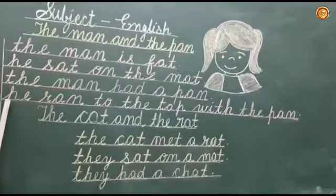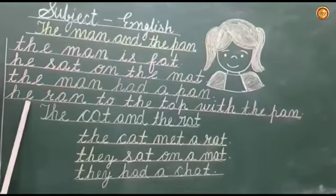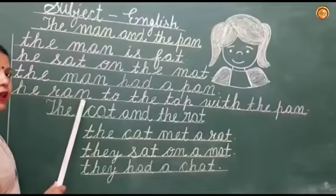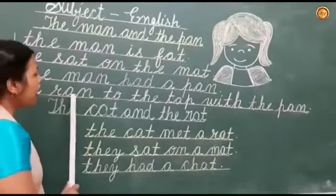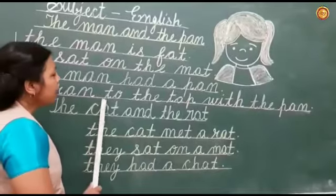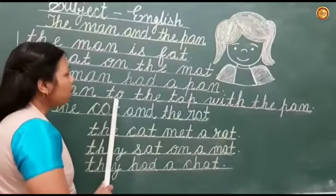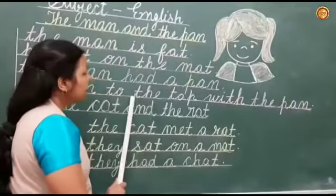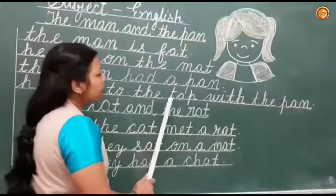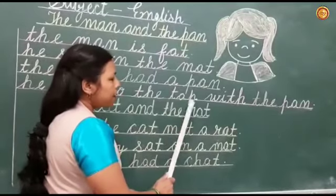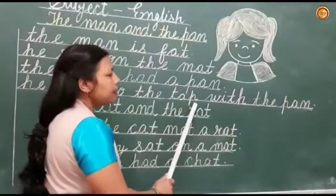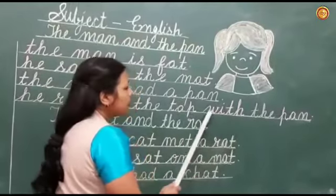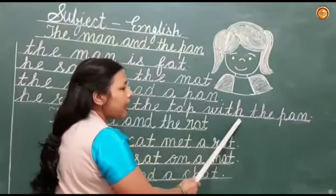Now we will read this line. H-E, he. H-E, he. R-A-N, ran. R-A-N, ran. T-O, to. T-O, to. T-H-E, the. T-H-E, the. T-A-P, tap. T-A-P, tap. W-I-T-H, with. W-I-T-H, with.